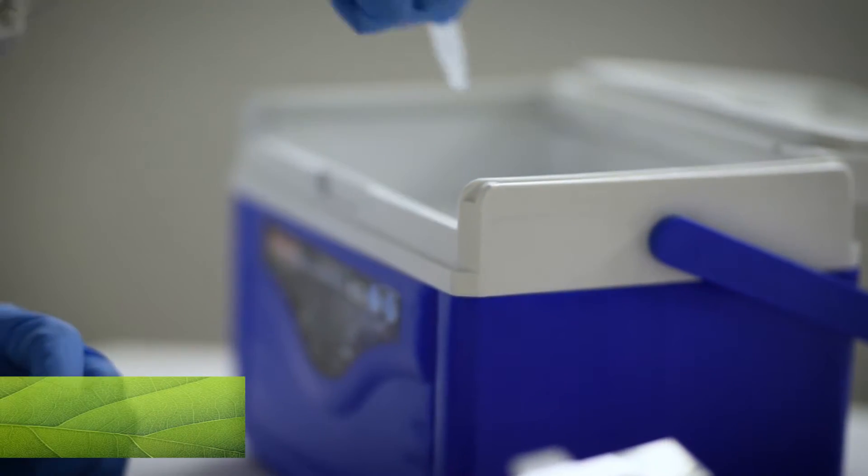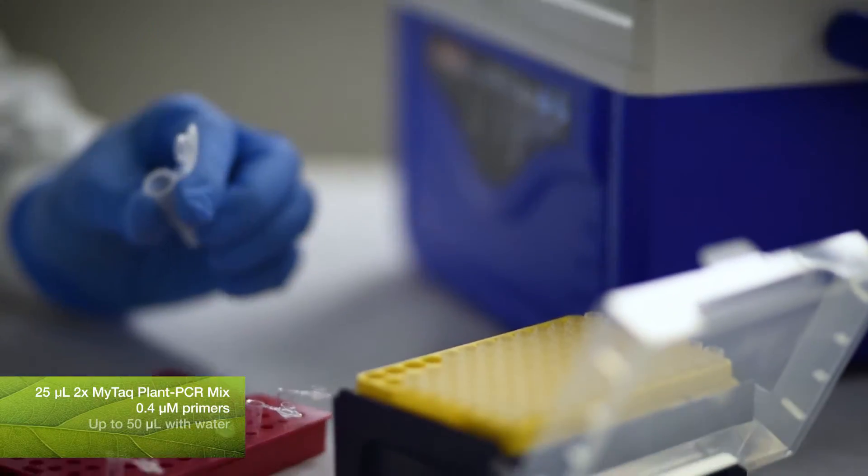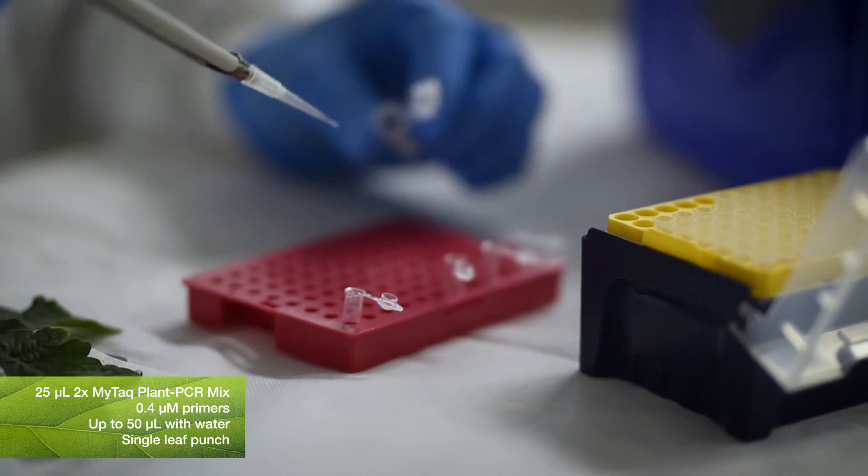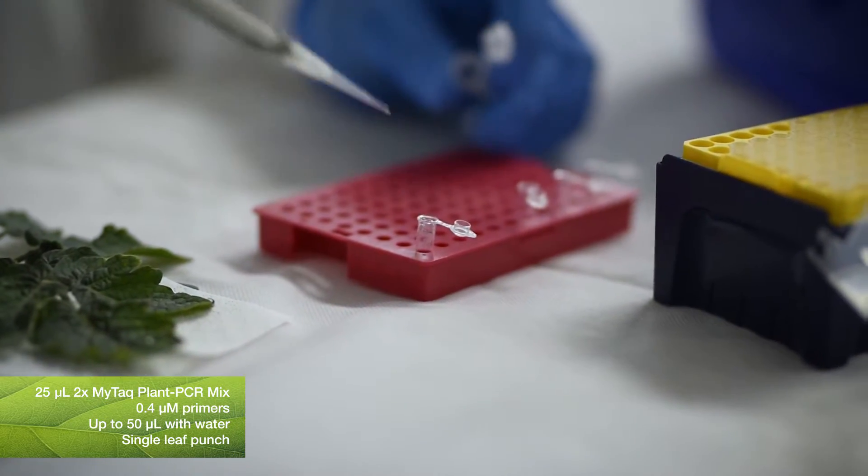In a tube add 25 microliters of the MITAC plant PCR mix, 0.4 micromole of the forward and the reverse primers.